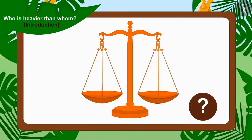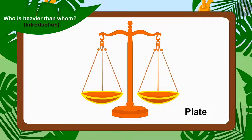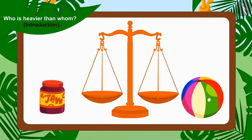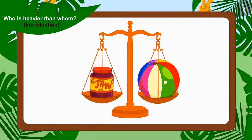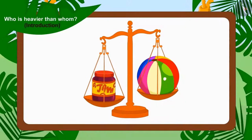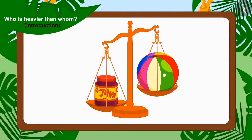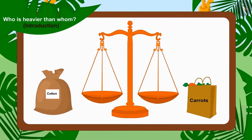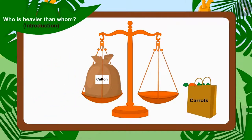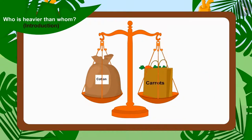A weighing scale is a device for measuring weight and it is made of two plates. We have to put the two things whose weight we want to compare on these plates. The weighing scale will tip towards the side of the plate which has more weight on it. Uncle first placed Bhola's sack on one plate and Bunny's bag of carrots on the second plate. Can you tell whose item is lighter and whose item is heavier?